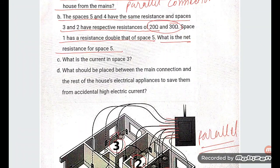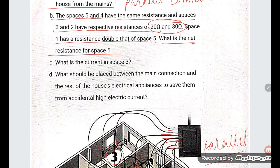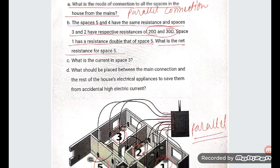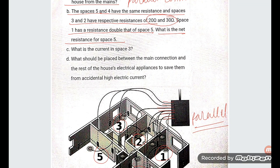This is a very important question. We need to set up the parallel resistance formula: 1/R = 1/R1 + 1/R2 + 1/R3 + 1/R4 + 1/R5. Now let us put in the values starting with 1/R5 and 1/R1.